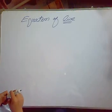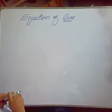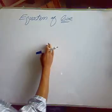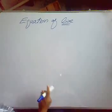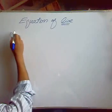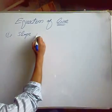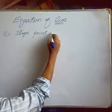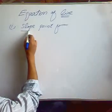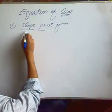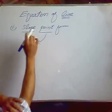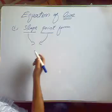In today's lecture we will study the equation of a line — how we can make the equation of a line depending upon the different information available. There are different forms and we will study them one by one. The first form is the slope-point form. From the name, we will have two things available: one will be the slope of the line, and the other will be any point which lies on that line.